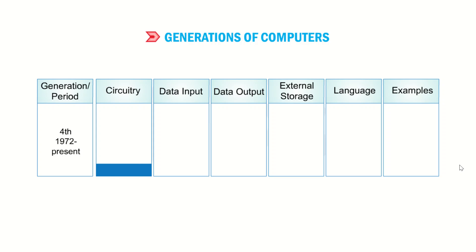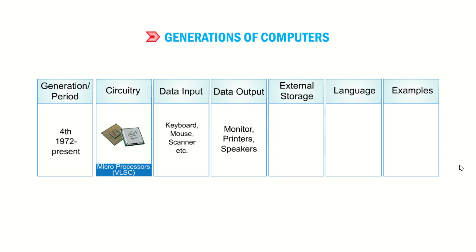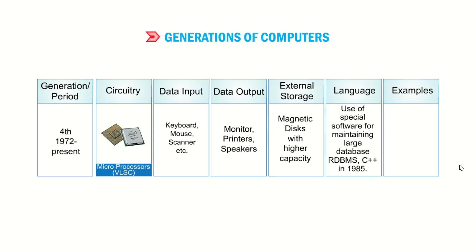Fourth generation computers, from 1972 to present, have circuitry of microprocessors and VLSI. Data input through keyboard, mouse, scanner, etc. Data output through monitor, printer, and speakers. External storage on magnetic disk with higher capacity. Languages used include special software for maintaining large databases, RDBMS, and C++ (introduced in 1985).